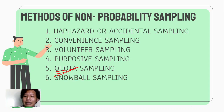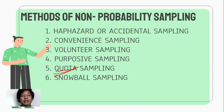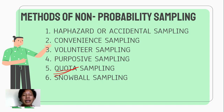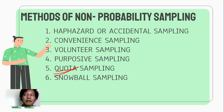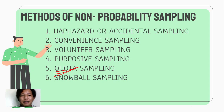And lastly, we have snowball sampling. Let's say for example, may interviewee ka — tatanong mo sa interviewee mo kung sino pa yung pwede nating maging interviewee. Tapos yung interviewee mo, ituturo niya yung isang tao. Then that will be your next participant or next member of your sample. That is so-called snowball sampling. And these are the methods of non-probability sampling.